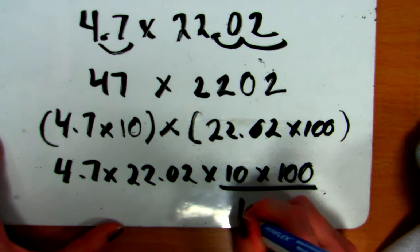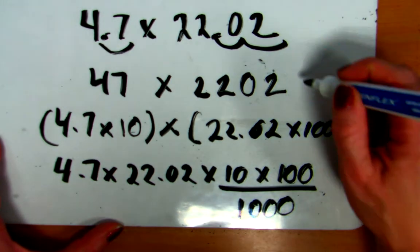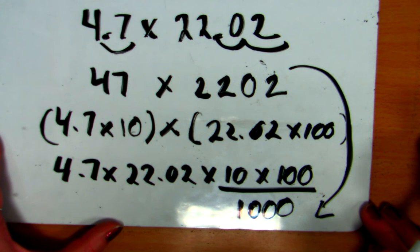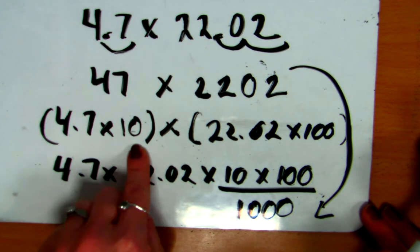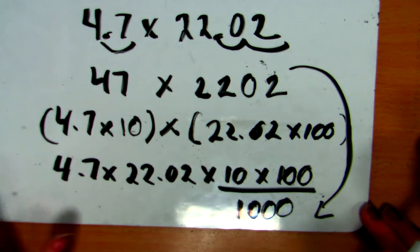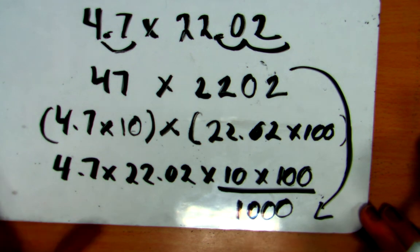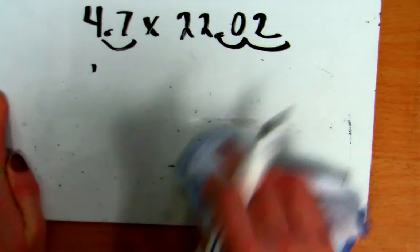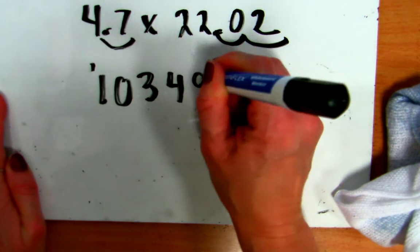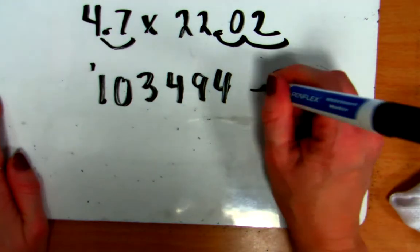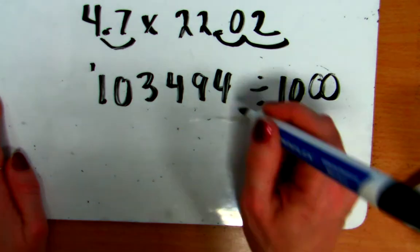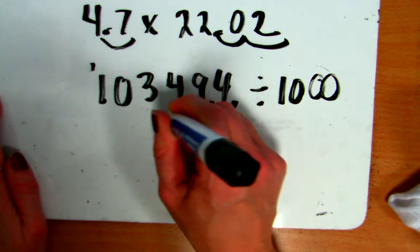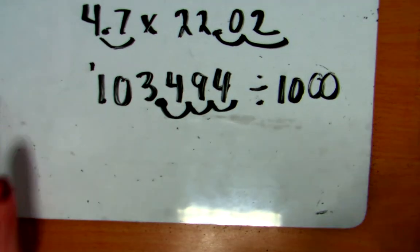Well, what's ten times a hundred? It's a thousand. So, when I multiply 47 times 2202, I get an answer that is a thousand times too big. Because when I took out those decimal points, I multiplied this by ten and I multiplied this by a hundred, which means my answer got 1,000 times too big. So, my final answer, when I put the decimal points back in, has to be then a thousand times smaller. So, if 103494 is a thousand times too big, I have to divide by 1,000. Well, what happens when I do that? I move the decimal point back. One, two, three spaces.